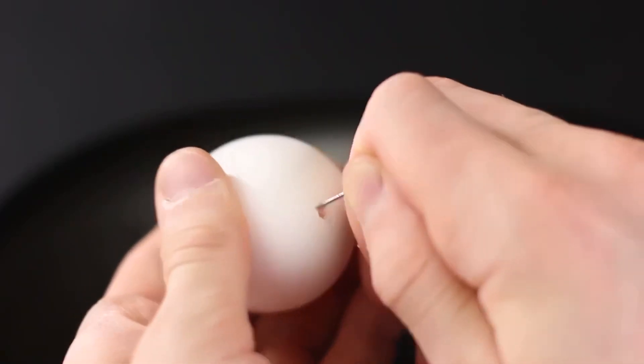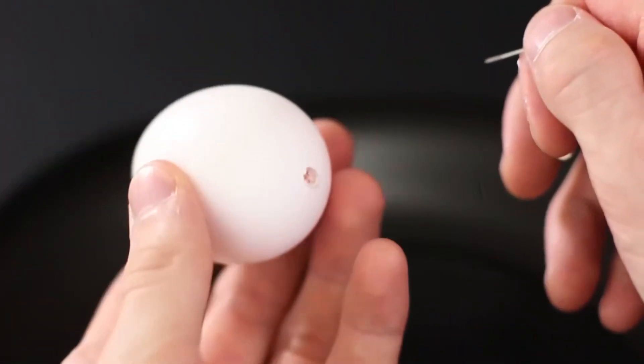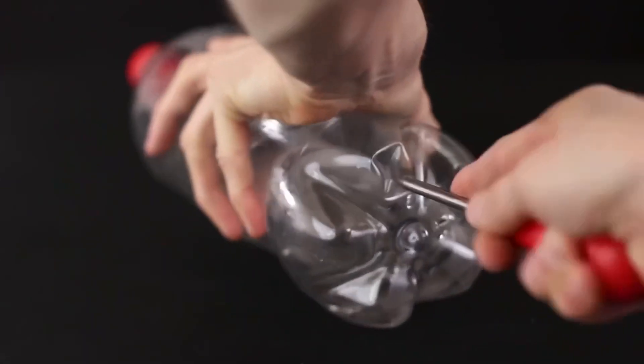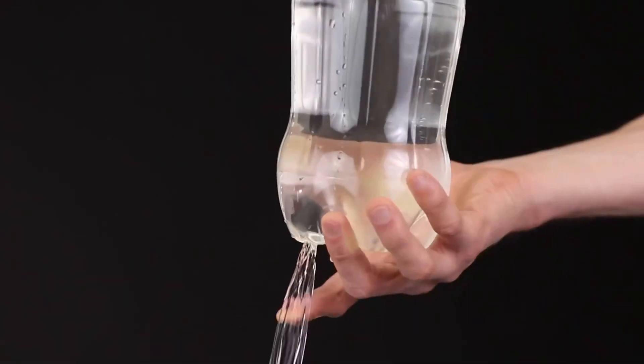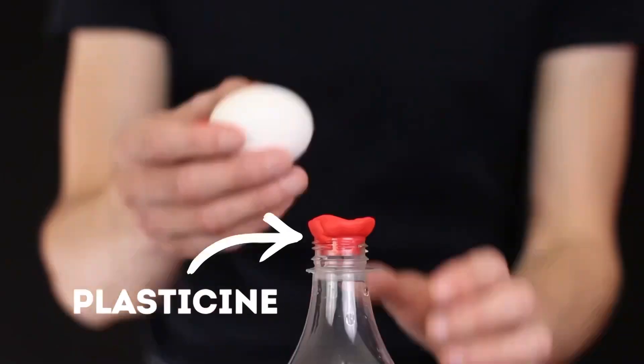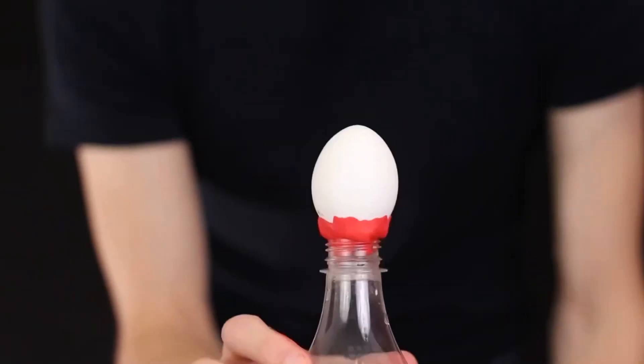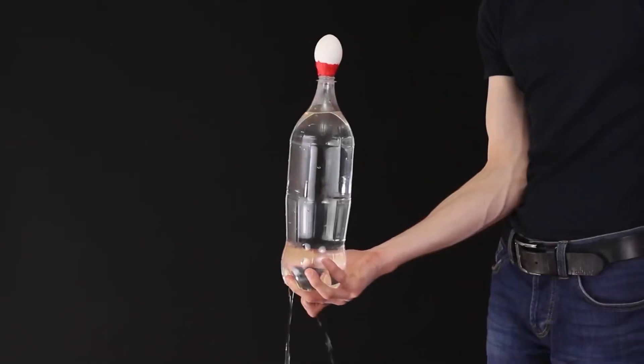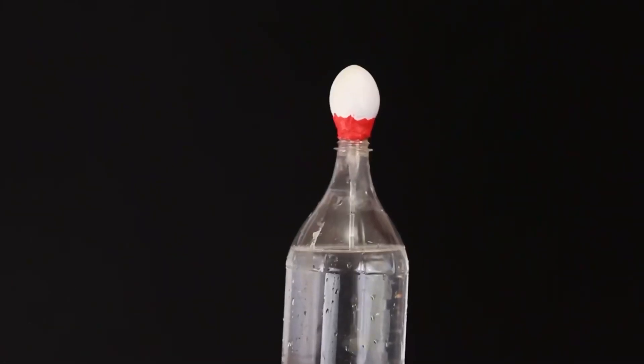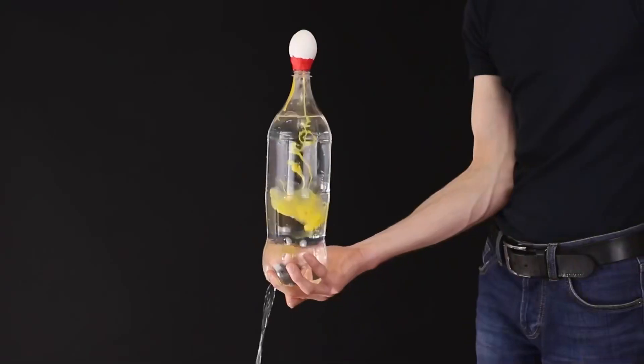To begin with, you will need two small holes on opposite sides of the egg. Now take a plastic bottle and make a hole in the bottom. Fill it with water. We fix the prepared egg on the neck of the bottle with plasticide. And now we remove the finger from the hole in the bottle and the pressure will pull out the entire contents of the egg.